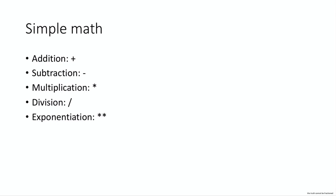And exponentiation is two asterisks. It's not a caret like an exponent sign that you might write on a calculator — that's something different. It's two asterisks. And this looks exactly the same in Python as it does in math.